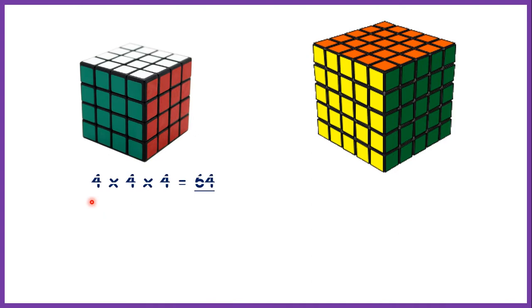So, 4 times 4 times 4 is 64 because 4 times 4 is 16, then 16 times 4 is 64. So we can say that 4 cubed is 64.